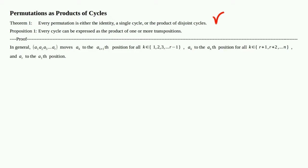In general, the cycle (a₁ ... aᵣ) moves aₖ to the aₖ₊₁ position for all k in the set {1, ..., r−1}. In other words, provided aₖ is one of a₁, a₂, a₃, all the way up to aᵣ₋₁, then it will move it one position to the right.